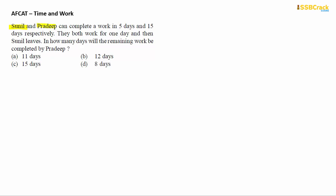Sunil and Pradip can complete a work in 5 days and 15 days respectively. Sunil takes 5 days and Pradip takes 15 days to complete the same task. They both work together for one day only, and then Sunil leaves. In how many days will the remaining work be completed by Pradip? This is a typical question expected in your AFCAT 2020 exam on Time and Work.